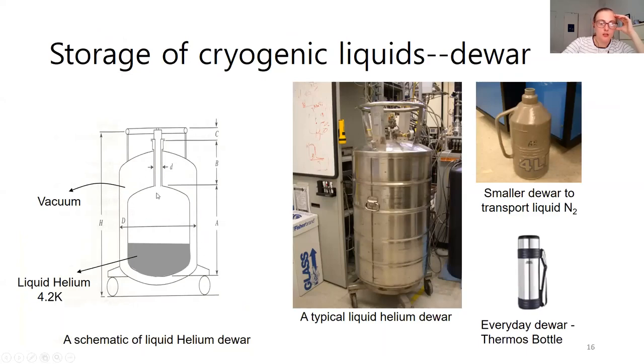These are stored in dewars where a dewar means that you have this vacuum area between the outside of the container and then where you're storing your cryogenic liquid. This is because vacuum has such a low thermal conductance that we don't have the issues of the outside of this being cold. It insulates the helium and keeps it in the liquid phase there if you have the pressure correct.